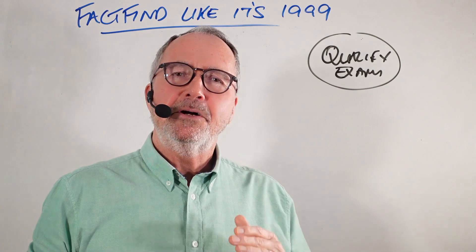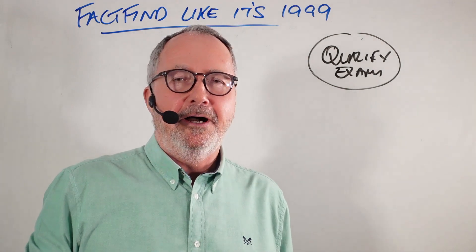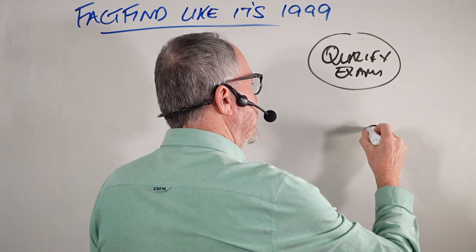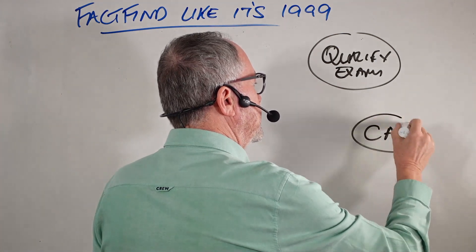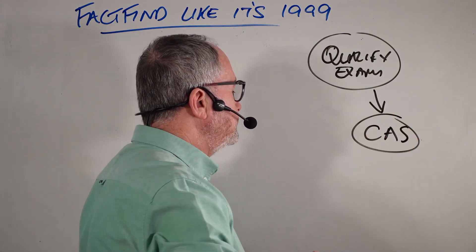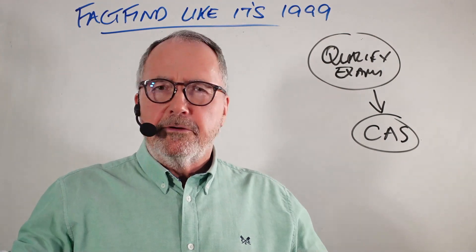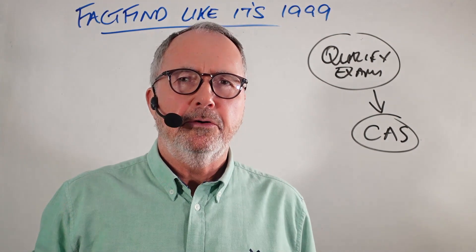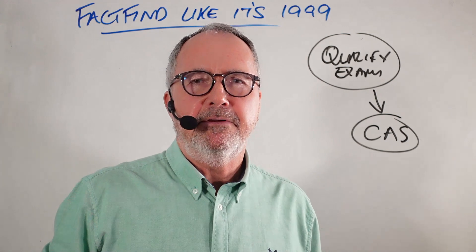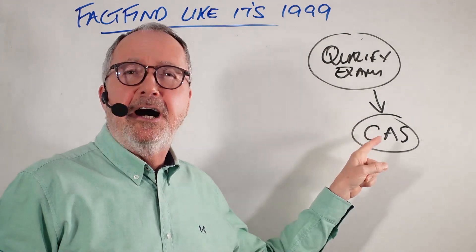Once you become qualified, then of course you've got to get your CAS - your Competent Advisor Status - something that you need to obtain through your principal, a network, or a firm. They need to make sure you're skilled in the area of giving financial advice.